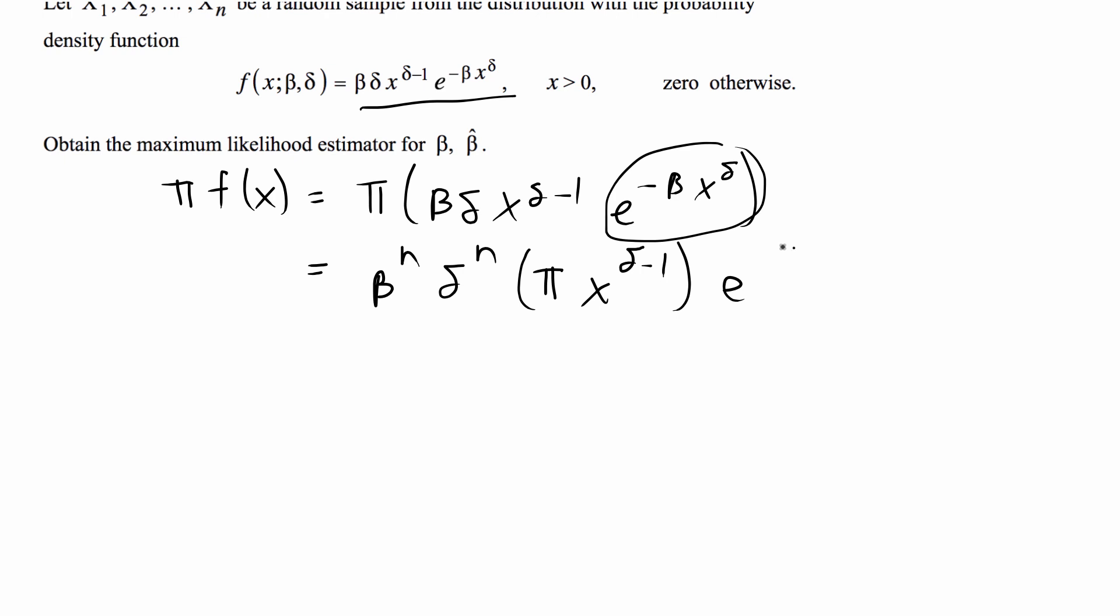And then for this part of the PDF, when you take the product of that it's going to be adding the variable part, so it's going to be e to the negative beta times the sum of x to the delta, and that's because e to the x times e to the x times e to the x multiple times is just e to the sum of the x's.